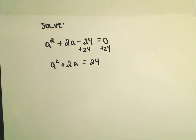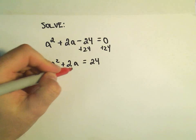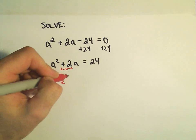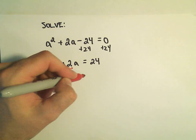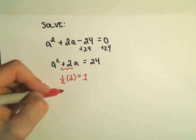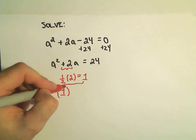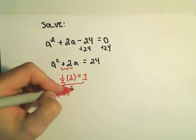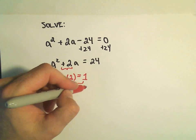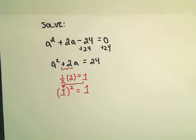And now we're going to do this trick of taking, again, whatever number is in front of the a, we take one half of that number. So one half of positive 2 is going to be positive 1. And then we take that number and we square it. So one squared is simply going to equal positive 1.